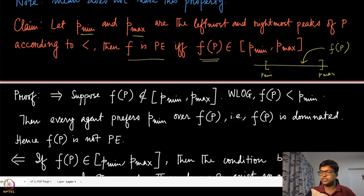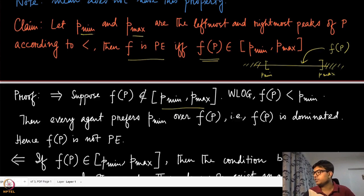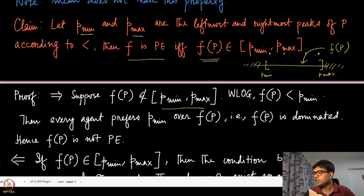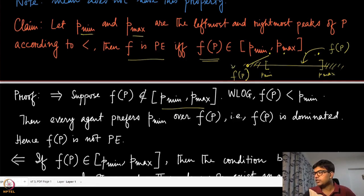For the forward direction (only-if), we prove by contradiction. Assume f(p) is not inside the interval. It can be on the higher or lower side, but in both cases, because all agent peaks lie somewhere in between, f(p) being outside is strictly worse than every agent's peak — it is a Pareto-dominated alternative.